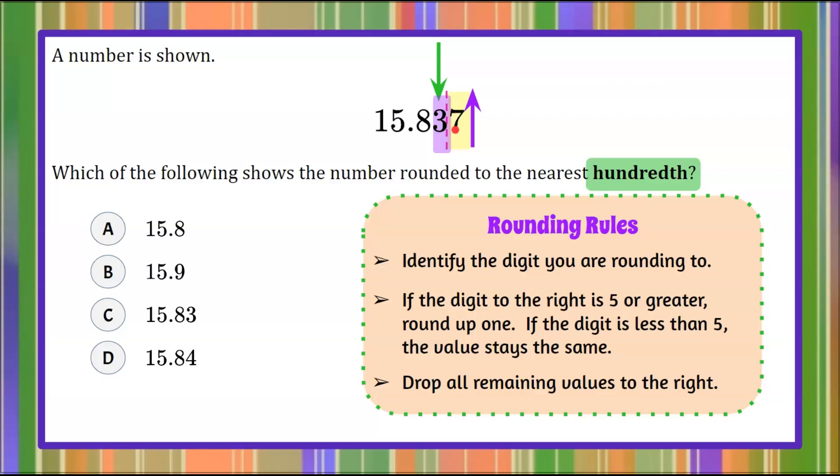We use the seven to determine whether the three stays or is increased by one. When we drop the seven, because it's five or greater, we round the three up to four.